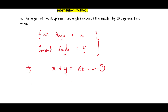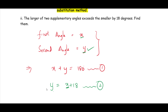The second condition is that the larger of the two supplementary angles exceeds the smaller angle by 18 degrees. Out of x and y, I will consider y as the larger angle. So the larger angle y equals the smaller angle x plus 18 degrees. This is equation 2.